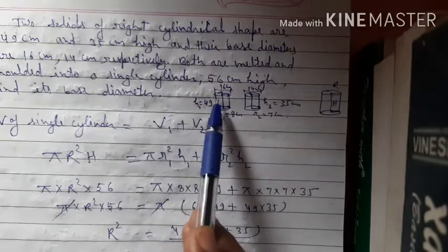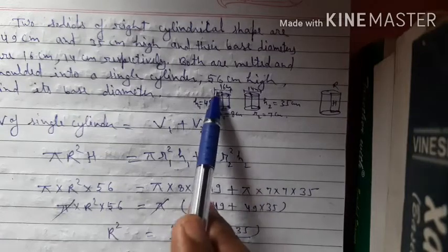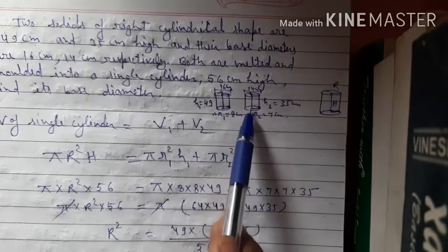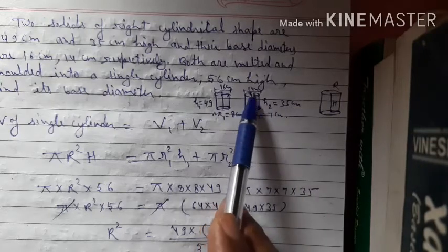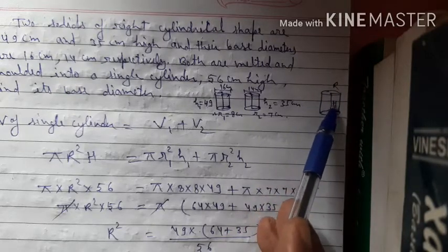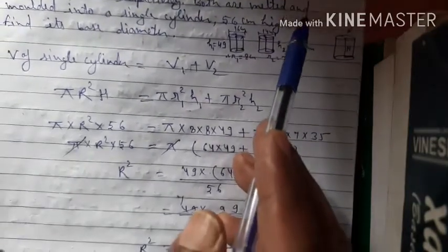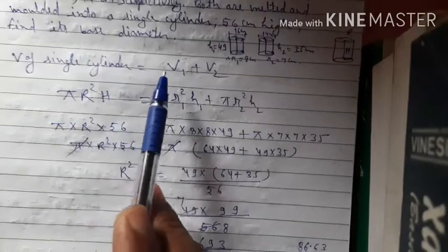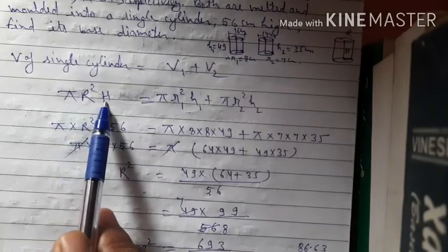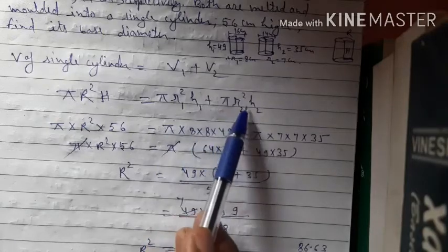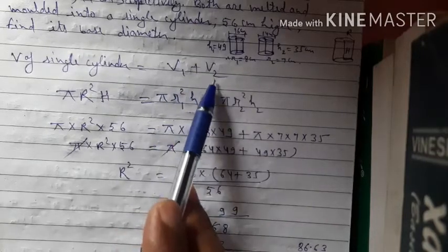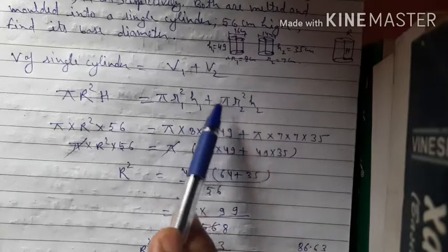First cylinder: height h1 = 49 cm, diameter = 16 cm, so radius r1 = 8 cm. Second cylinder: height h2 = 35 cm, diameter = 14 cm, so radius r2 = 7 cm. The new cylinder has height H = 56 cm and radius R (to find). Formula: πR²H = πr1²h1 + πr2²h2.